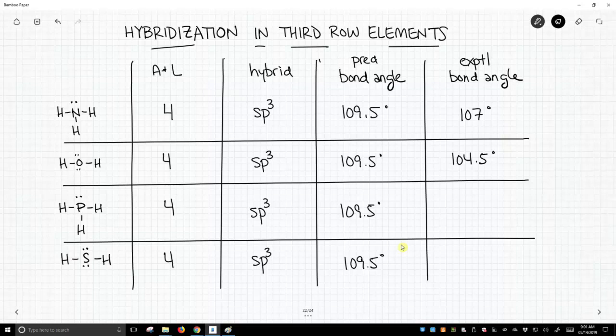So what are the experimental bond angles in these cases? For phosphine, it's 93 and a half degrees, and for hydrogen sulfide, it's about 92 degrees.